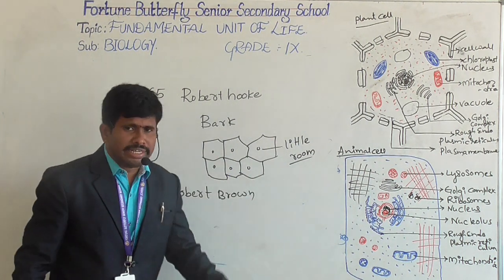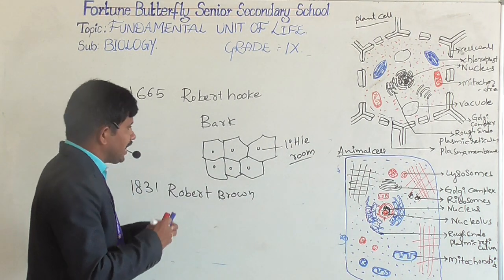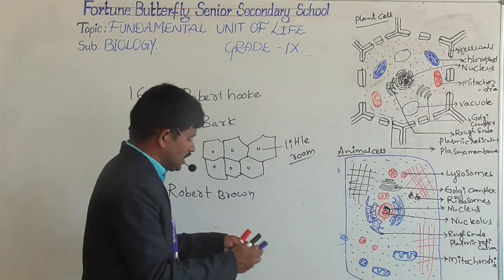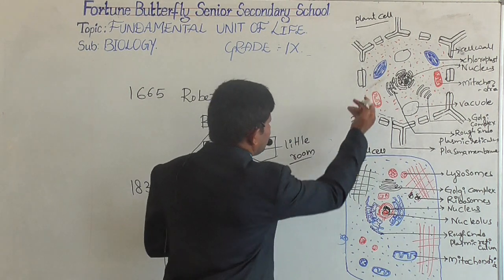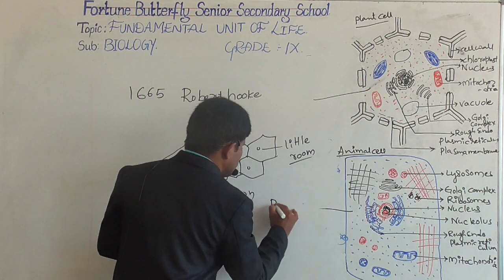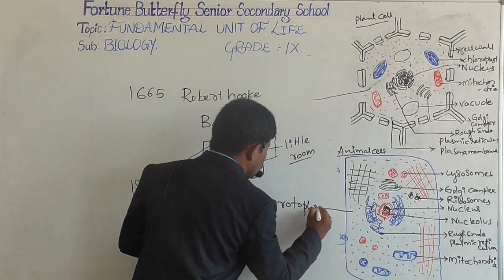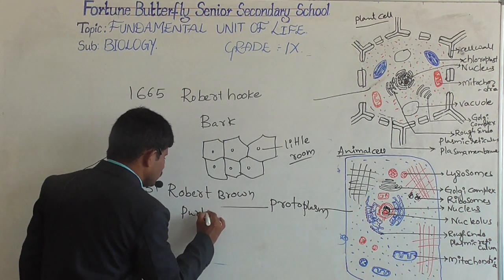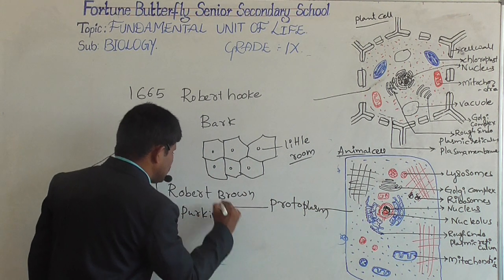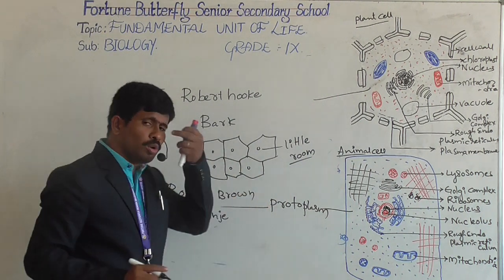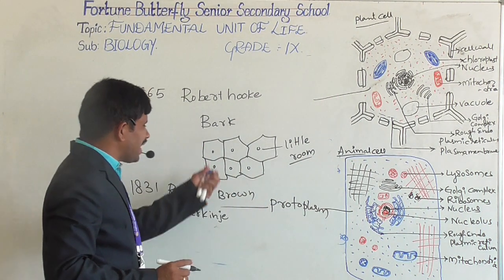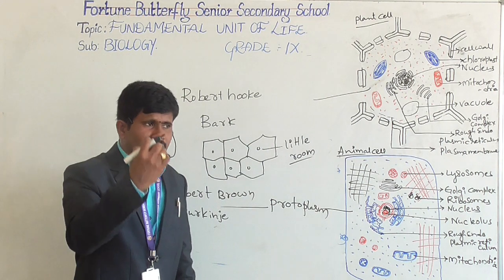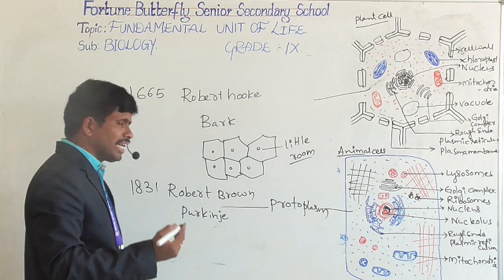One more scientist also made an identification. There is a fluid present inside the cell, in both plant cells and animal cells — this is known as protoplasm. The term protoplasm was coined by the scientist Purkinje. After that, many scientists worked on the cell and discovered many things.